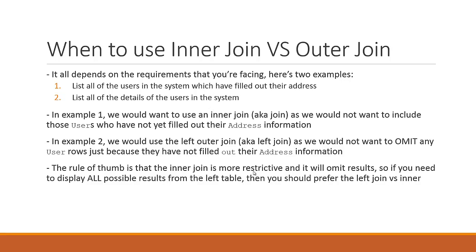If you hear someone say join, they mean inner join. We would use a join because we would not want to include those users who have not yet filled out their address information. We want to list only those users which have filled out their address — this is an exclusive statement. We want to exclude some rows, specifically the people who have not yet filled out their address. A good way to exclude data is by using the inner join, because that's exactly what it does: it excludes rows where there are no matches.